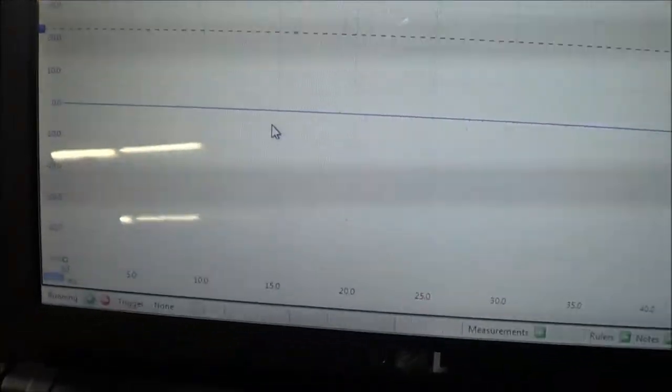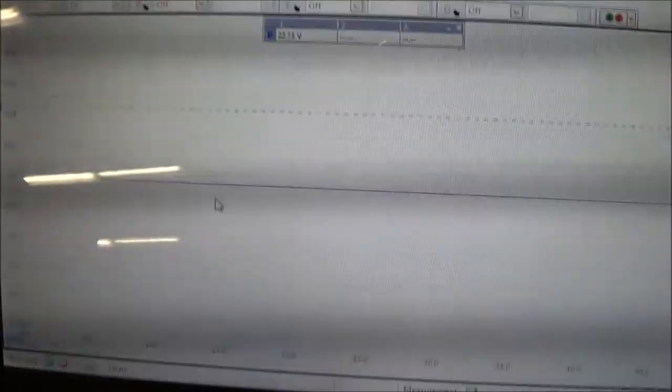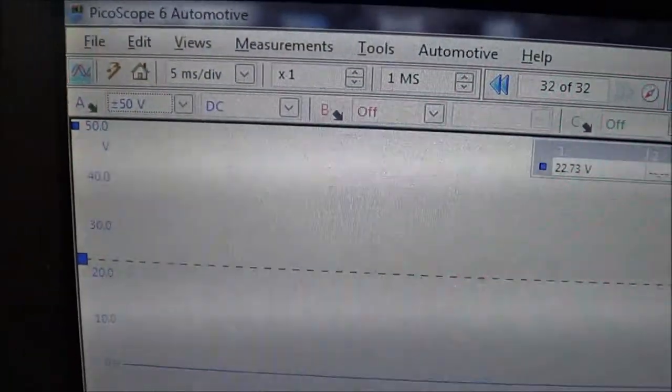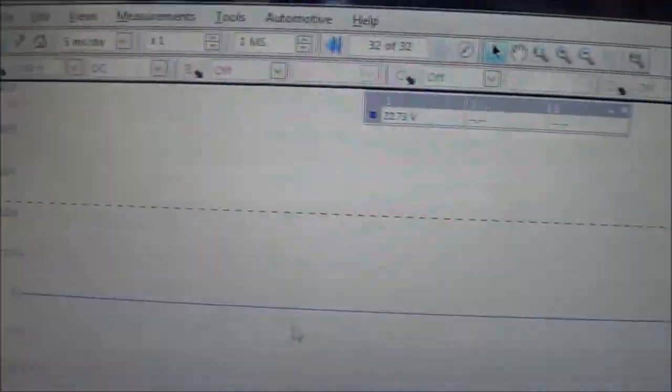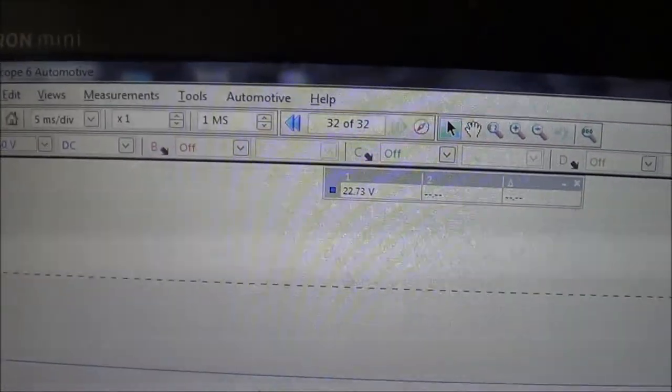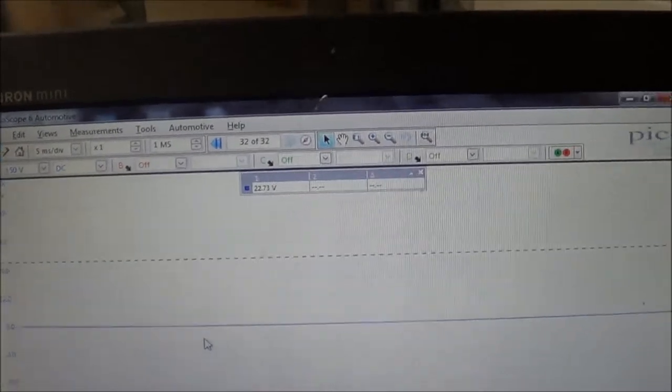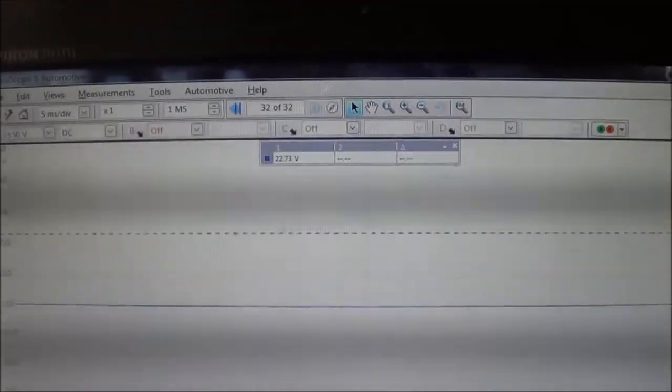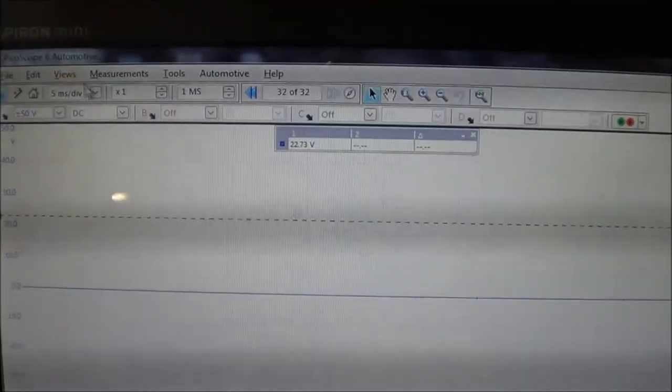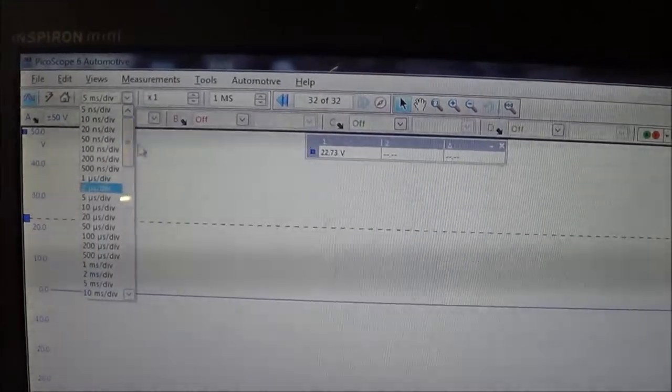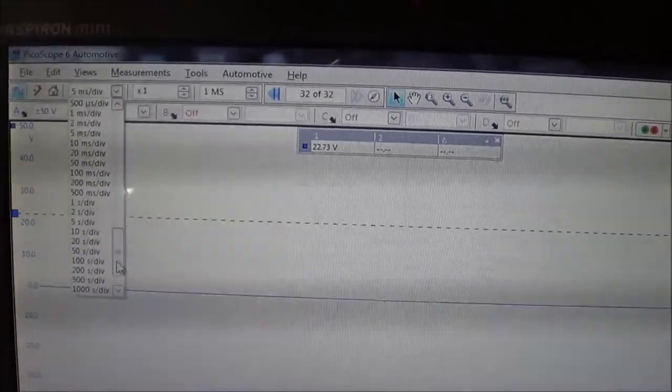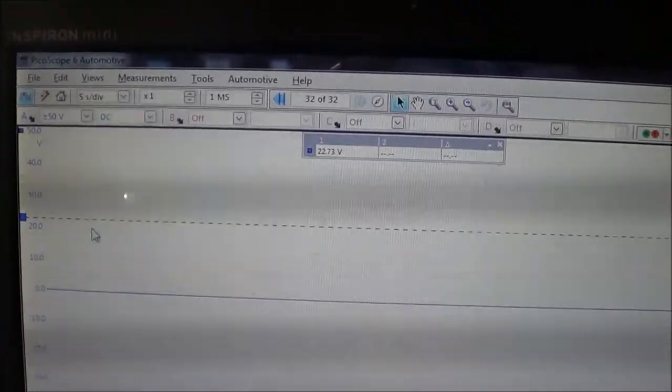Alright, so right now the setup for the oscilloscope: 50 volts on channel A, five milliseconds. Doesn't really matter at this point. Let's change that to a longer time base so we can see it on the screen. Let's say five seconds per division.